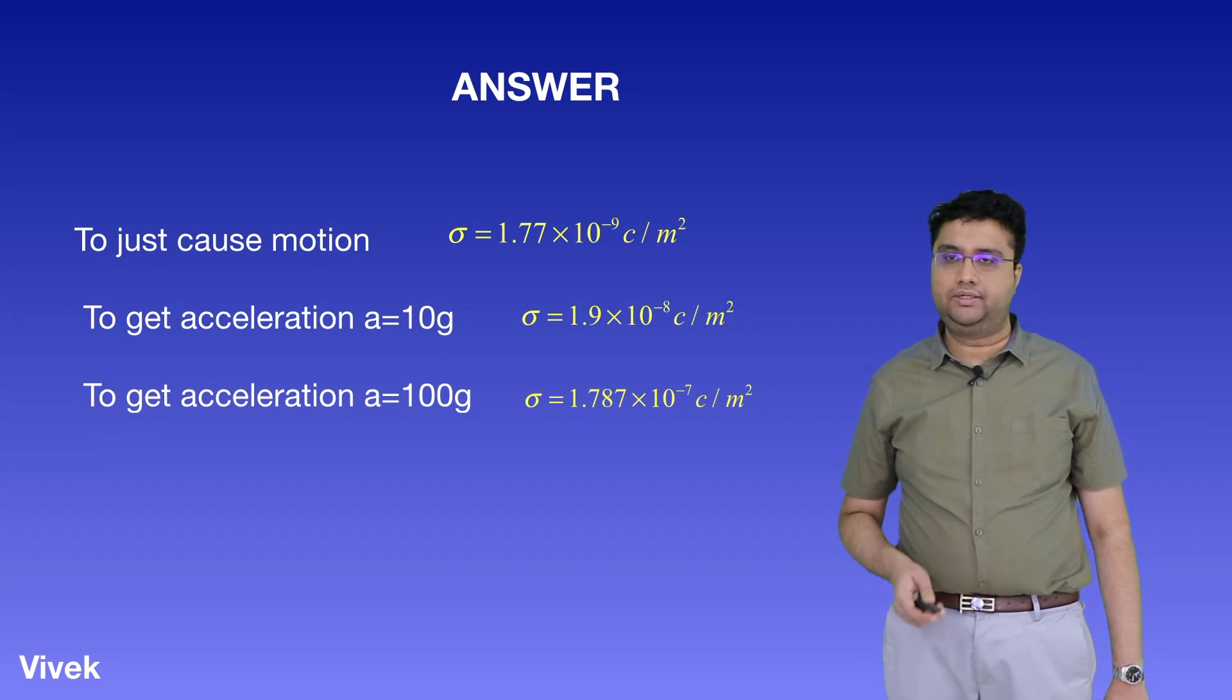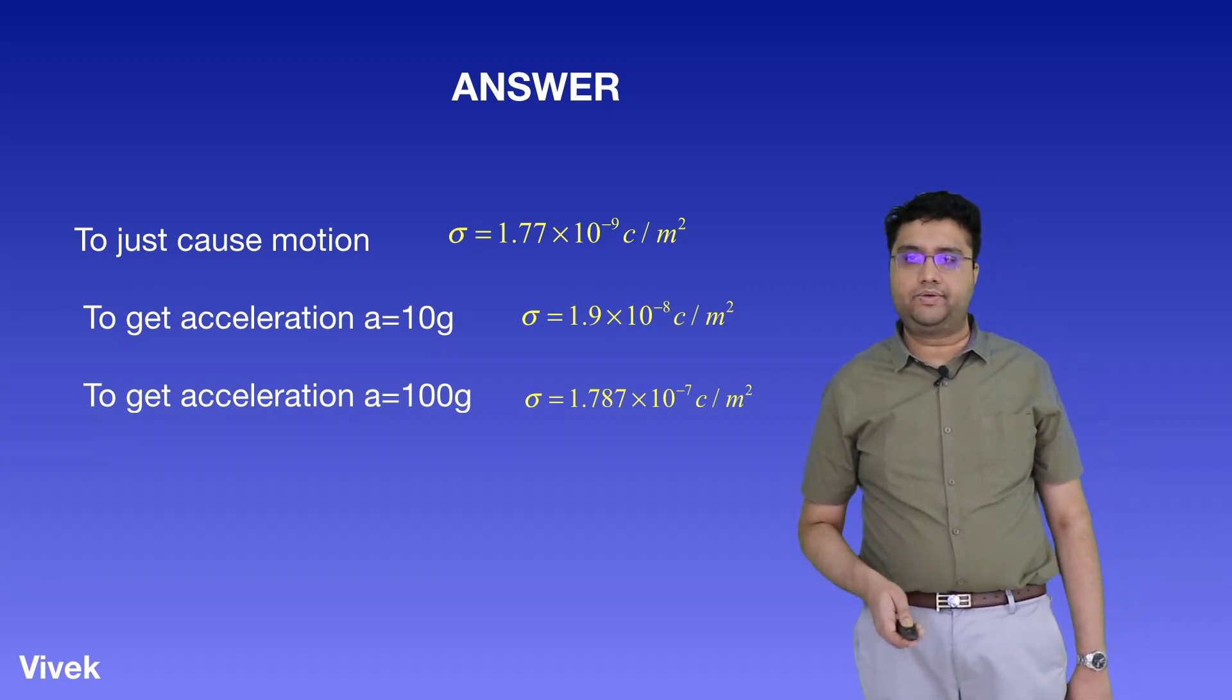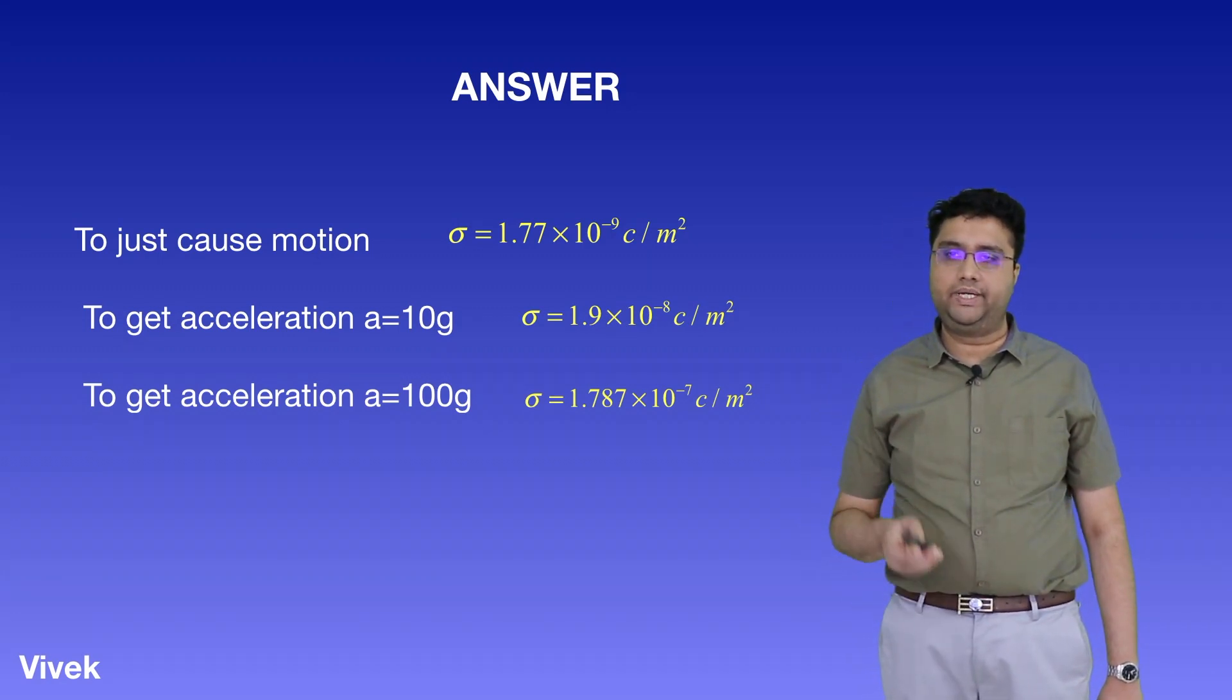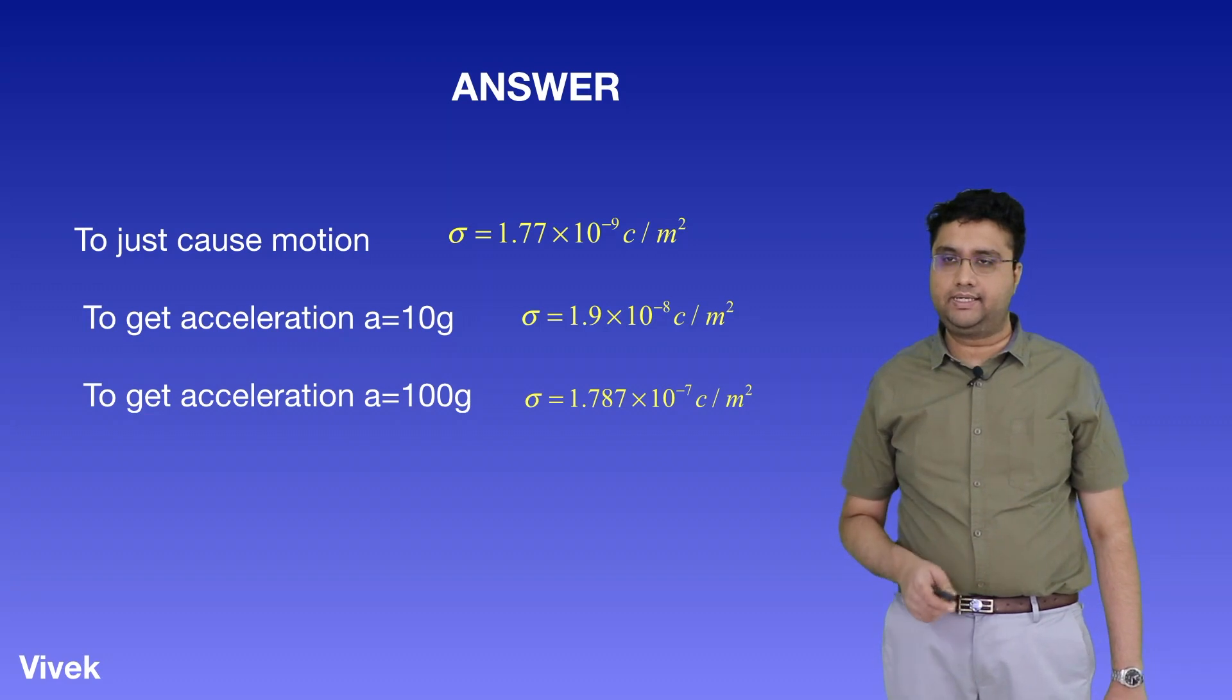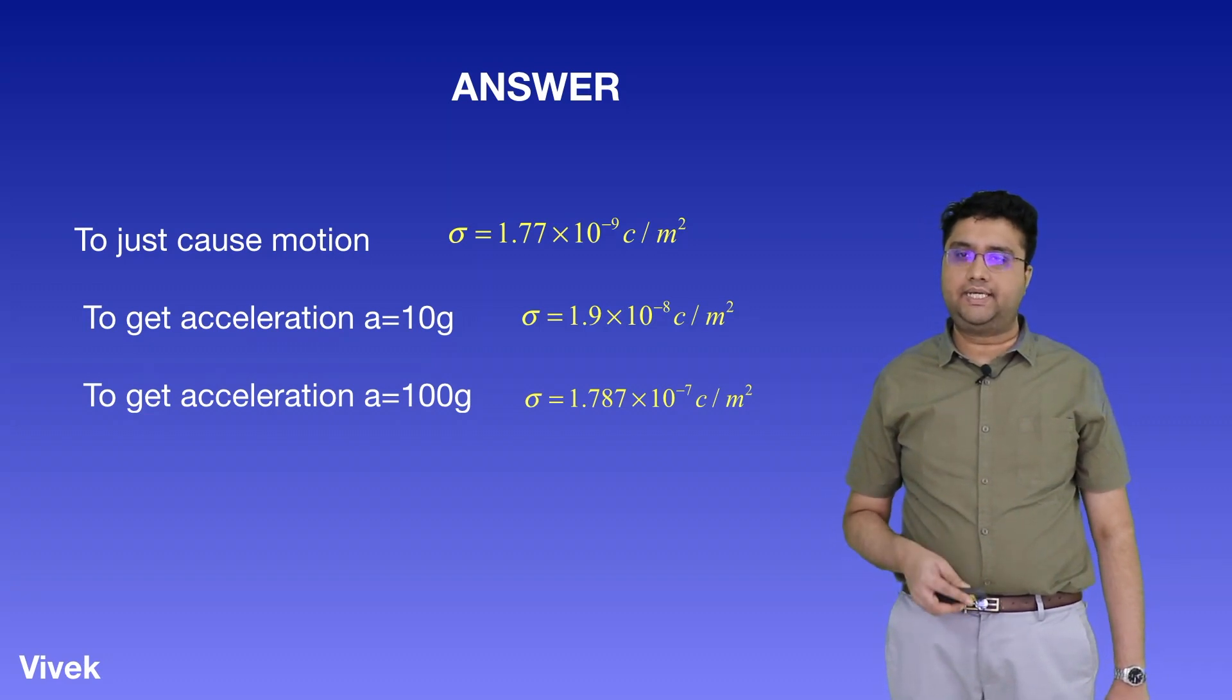So to just cause the motion, sigma is 1.77 times 10 to the power minus 9 coulomb per meter square. To get 10g acceleration, sigma is 1.9 times 10 to the power minus 8 coulomb per meter square. And to get 100g, it is 1.787 times 10 to the power minus 7 coulomb per meter square.